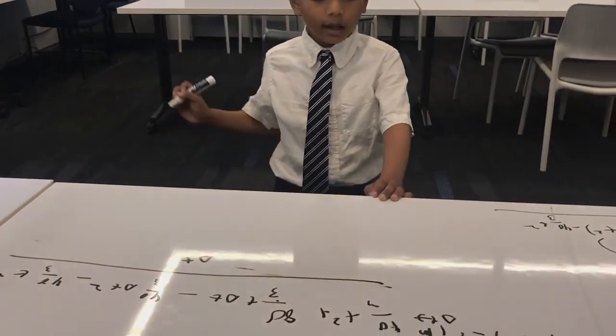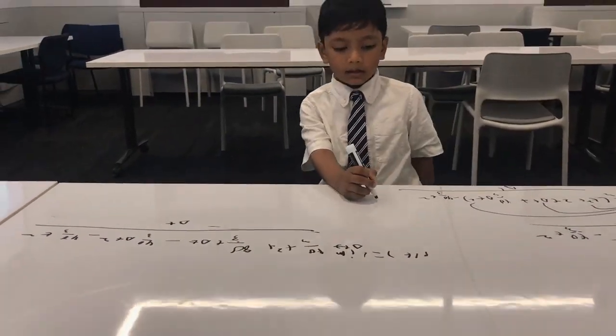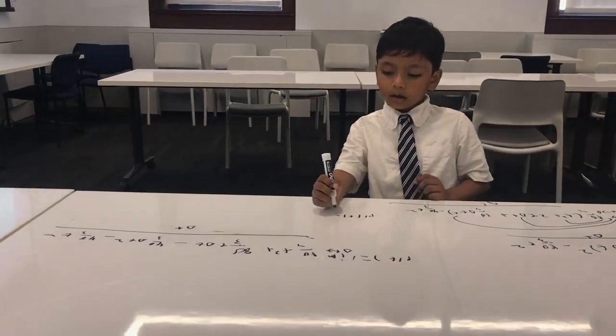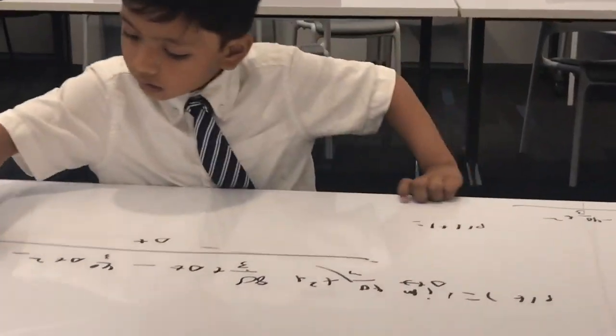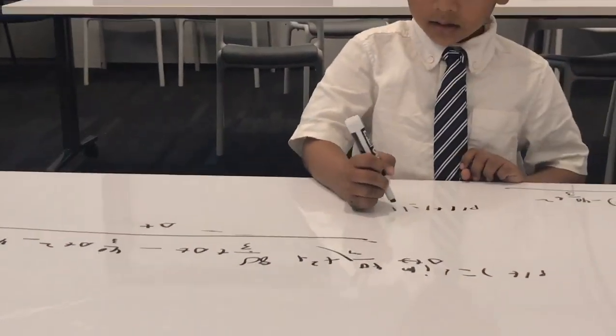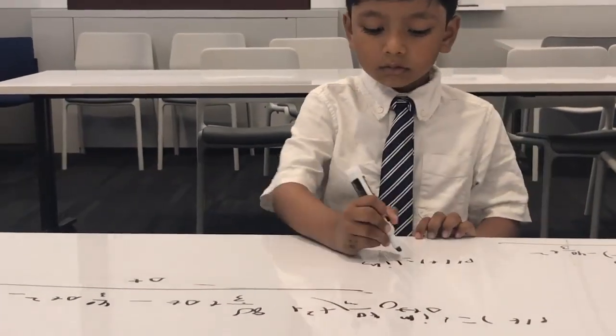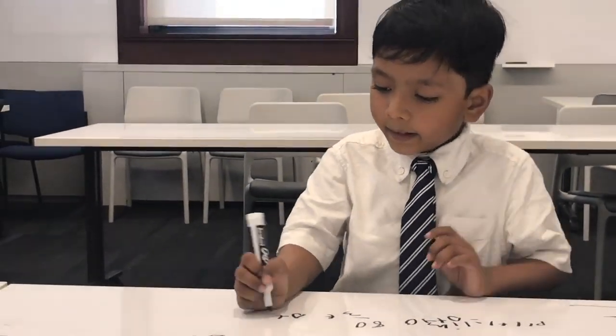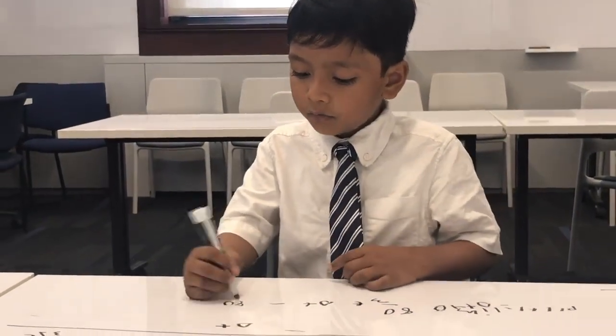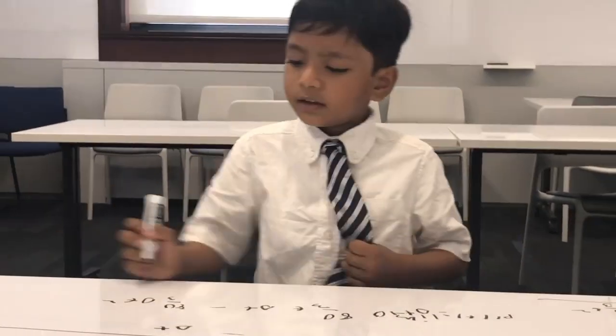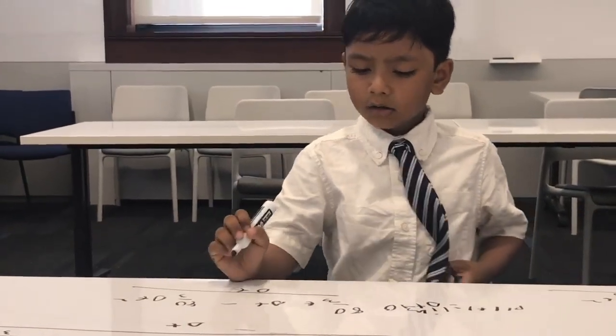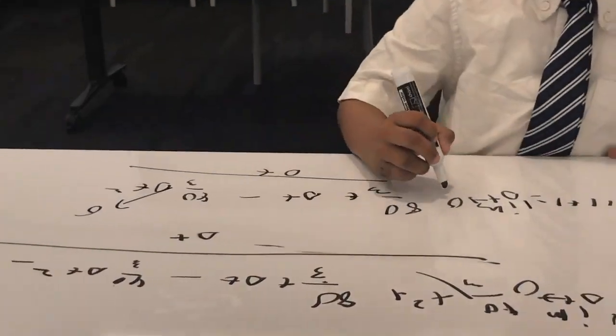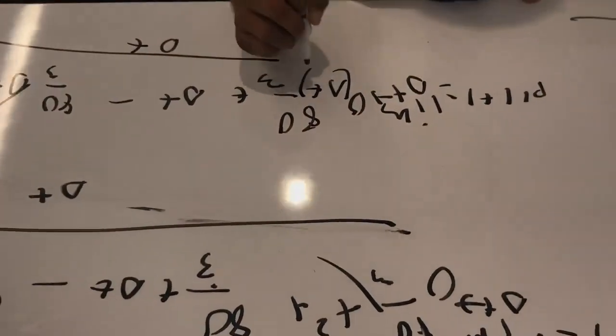So that means that now, this delta T minus 40 over 3 delta T, delta T squared, delta T, zero, so that means this goes 0, this delta T, this camera.